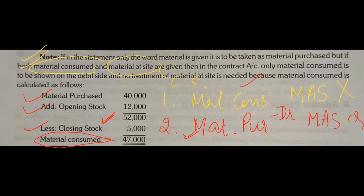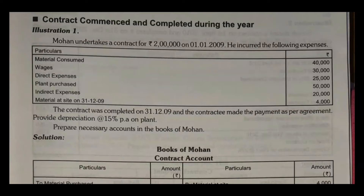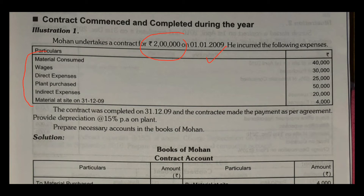This is an important treatment which you will face in your questions as well. So now let's move on to our practical question. Mohan undertakes a contract for Rs. 2 lakhs on 1st January 2009 — this is your contract price, which we discussed in the previous video. The contract was completed on 31st December 2009. So this is January to December, completed within one year.